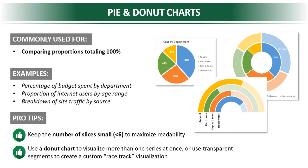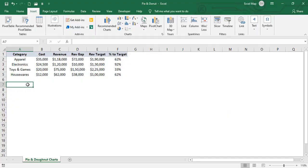The second pro tip is to use a donut chart to visualize more than one series at once. In a pie chart you can only use one series of values, but in a donut chart you can use multiple series values, or use transparent segments to create a custom race track visualization. We'll see pie and donut charts in this session with an example.